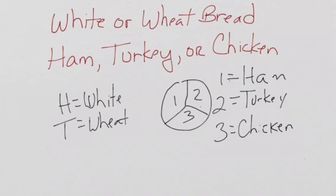Now, to combine the two together to model ordering a sandwich, we could flip a coin and spin the spinner. And say we got tails and three, well that means they wanted wheat bread with chicken.